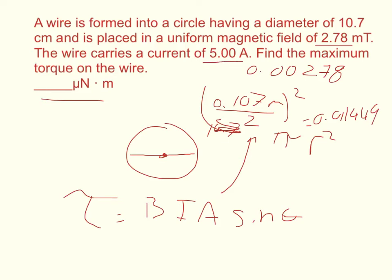Notice the current is already in SI units at 5 amps. So multiply 5 times 0.00278 times 0.011449 times pi, which is 3.14, and then the sine.